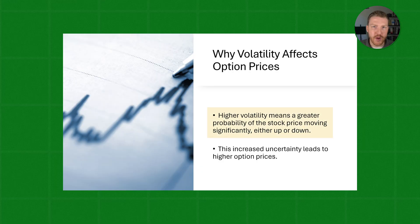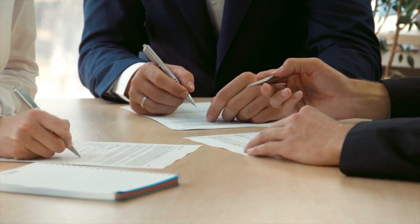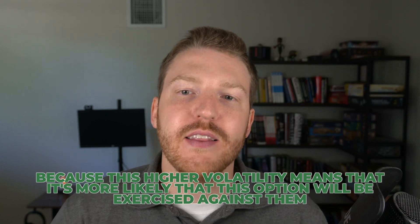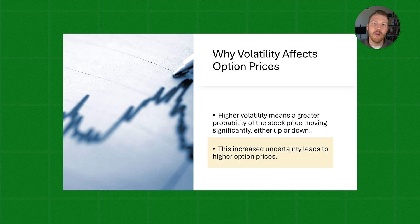Higher volatility means that there is a greater probability for the underlying stock to have large price swings up or down. With that higher probability of large price swings, there is a higher chance of the stock price moving beyond the strike price. As a result, option sellers demand higher option premiums to compensate them for the higher risk they take when they write an option contract on a stock with higher volatility, because it's more likely that the option will be exercised against them.